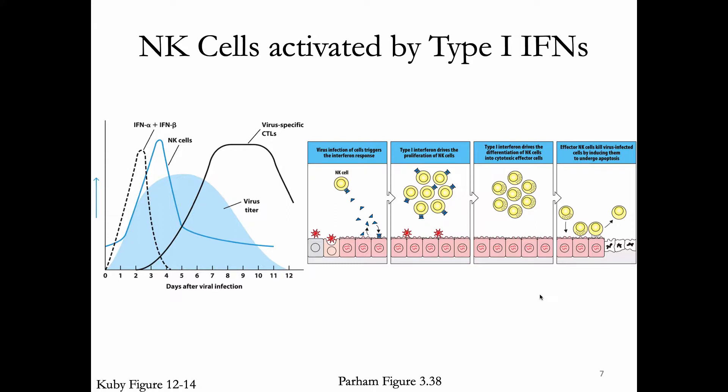NK cells are activated by type 1 interferons. When we have a viral infection and some innate immune response, our cells can make type 1 interferons that stimulate NK cells, allowing those NK cells to proliferate and differentiate. Those NK cells will then be very good at cytotoxicity. In these ways, NK cells are really similar to things you've seen before. The place where NK cells get to be unique is in thinking about their receptors.